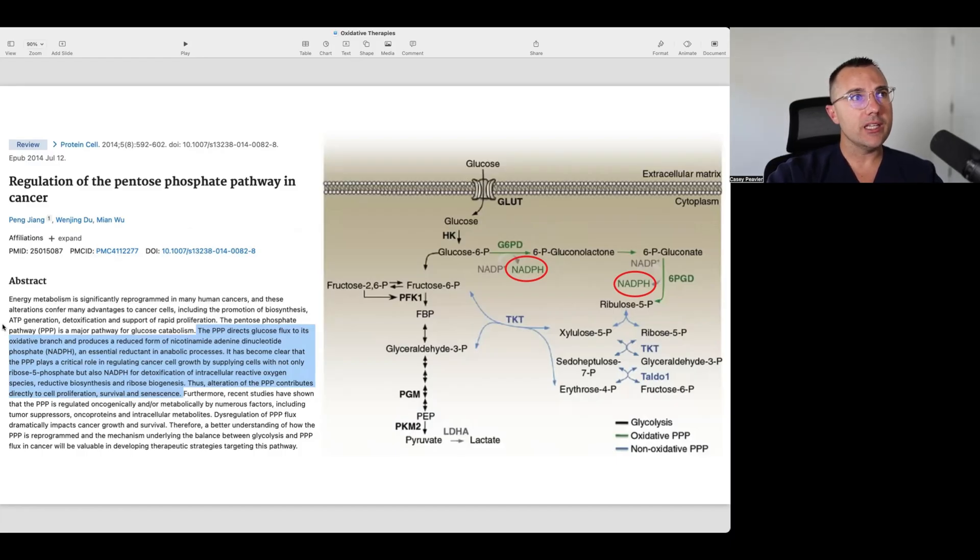One of the ways it does that is through the PPP or pentose phosphate pathway. I pulled this paper from 2014, titled regulation of the pentose phosphate pathway in cancer. It says the PPP directs glucose flux to its oxidative branch and produces a reduced form of nicotinamide adenine dinucleotide phosphate, NADPH, an essential reductant in anabolic processes. It has become clear that the PPP plays a critical role in regulating cancer cell growth by supplying cells with not only ribose phosphate, but also NADPH for detoxification of intracellular reactive oxygen species.